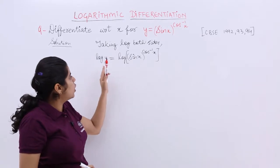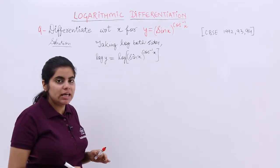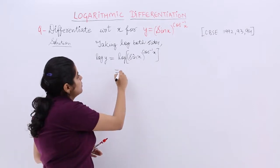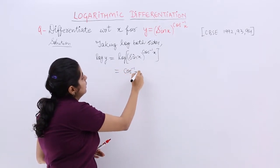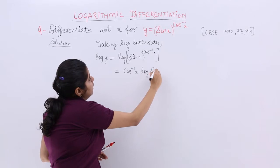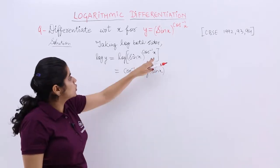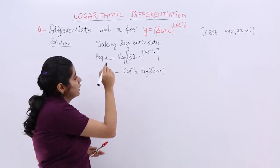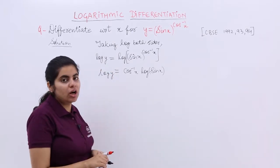Now, how to do it? Log y is there. Here also something is there. You know the formula log m raised to the power n. Power comes outside in the front, rest everything remains as it is. So it is cos inverse x, log sin x and here it is log y. Crystal clear simple concepts.